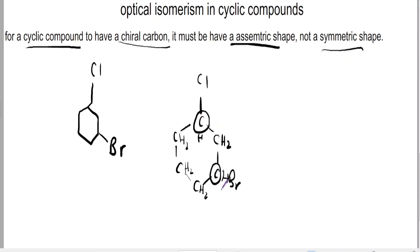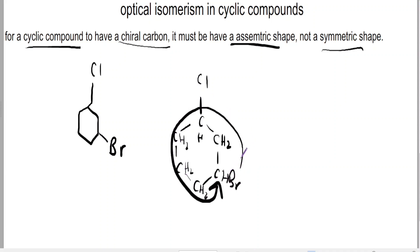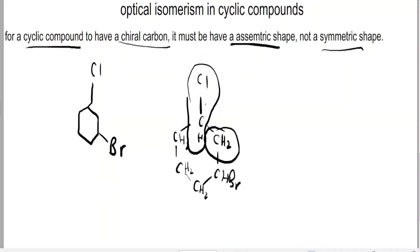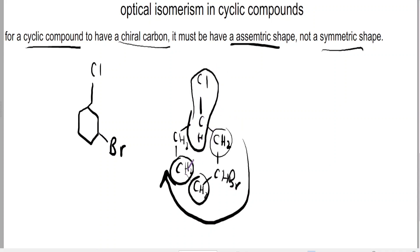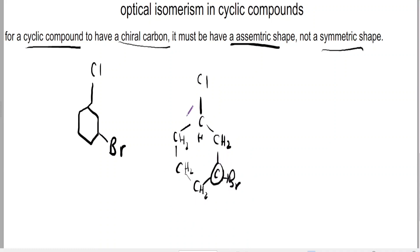Now, what about this carbon right here — can this be chiral? Yes, because this carbon is bonded to a hydrogen, a bromine, and these two bonds are different. Going anti-clockwise, the first group is CH2 and the second group is CHCL. But when I go clockwise, the first group is CH2, which is similar, but my second group is a CH2, whereas when I went anti-clockwise, the second group was CHCL. Since these two are different, I can also say that this carbon is chiral.